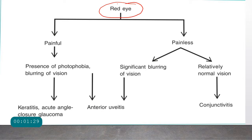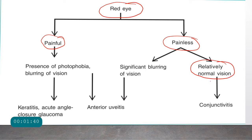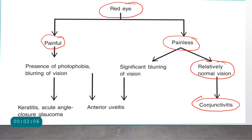Whenever you have a red eye, a key question to ask is whether it is painful or painless. When redness of the eye is painless and vision is normal, you can deduce it is coming from the conjunctiva — the most common cause being conjunctivitis. In conjunctivitis, the patient will not have severe pain, and vision is normal because the conjunctiva plays little role in vision.